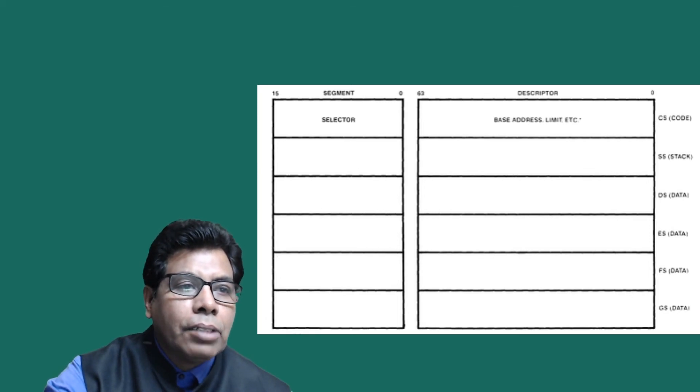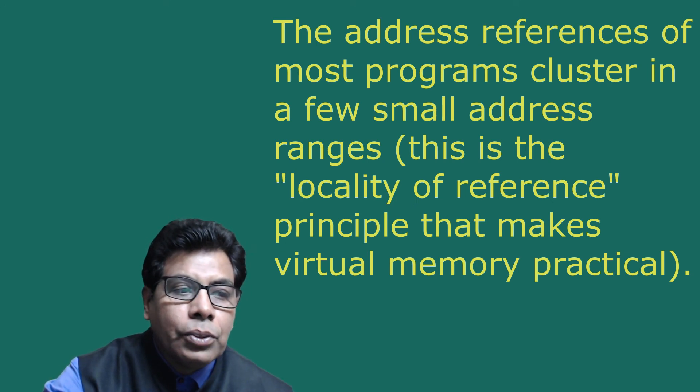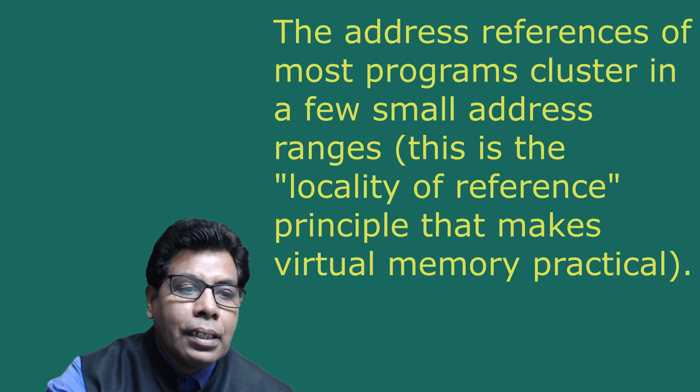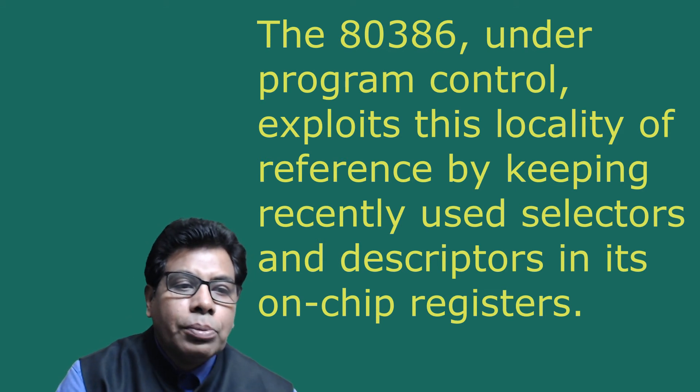The descriptor is 64-bit and the segment register is 16-bit. In effect, these registers act as a programmer-controlled cache that eliminates selectors from most instructions and permits most logical addresses to be translated on-chip without consulting a descriptor table. The address references of most programs cluster in a few small address ranges — this is the locality of reference principle that makes virtual memory practical. For example, if a procedure is stored in a segment, many instructions are likely to be fetched from that segment before control passes to another procedure in another segment. The 80386, under program control, exploits this locality of reference by keeping recently used selectors and descriptors in its on-chip registers.